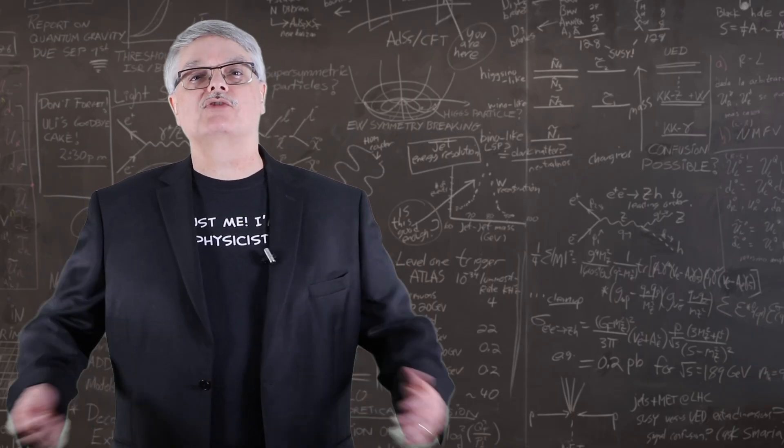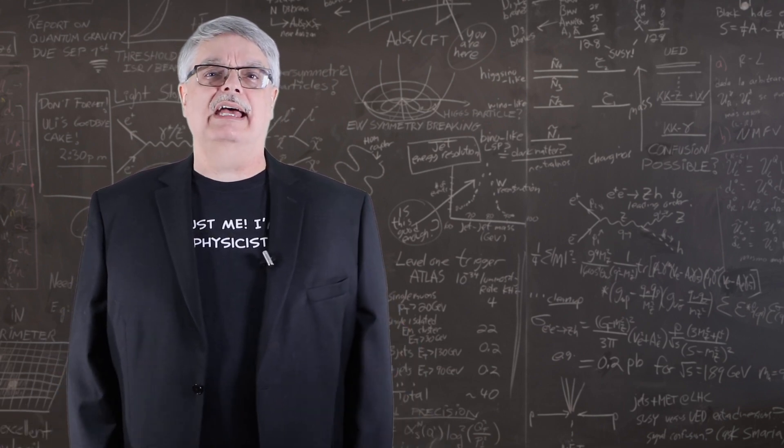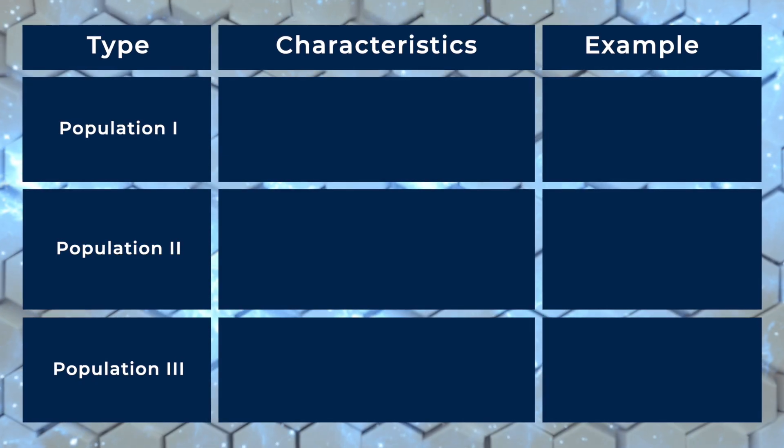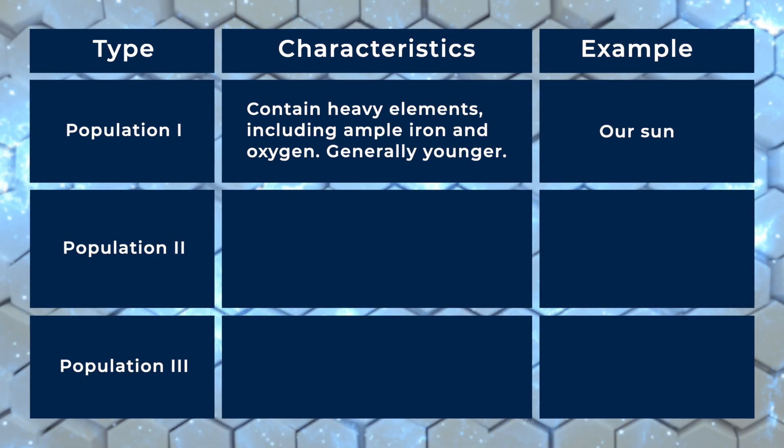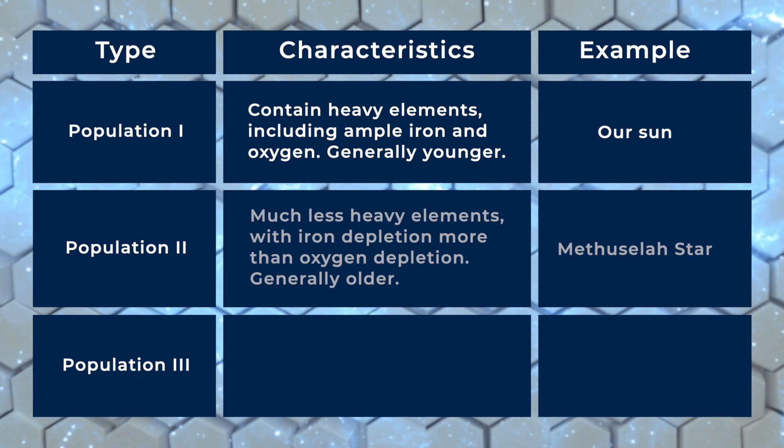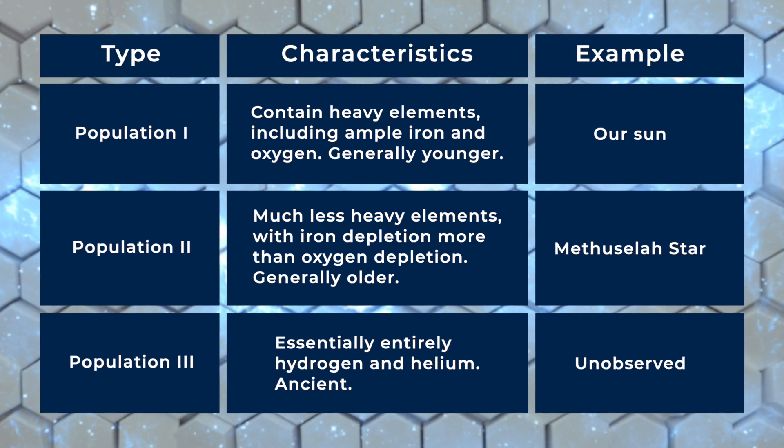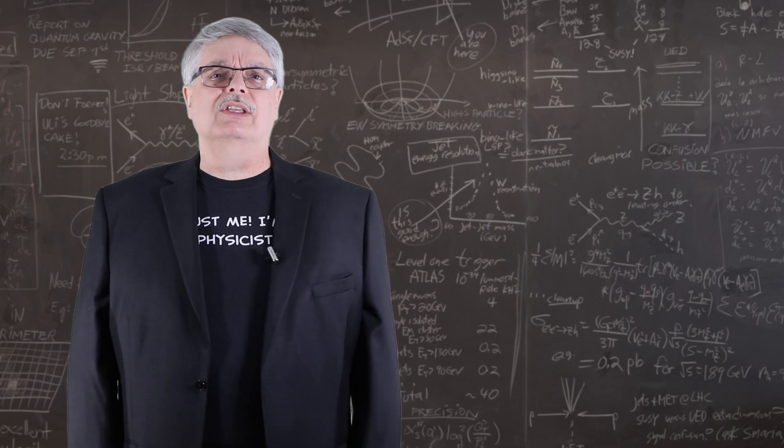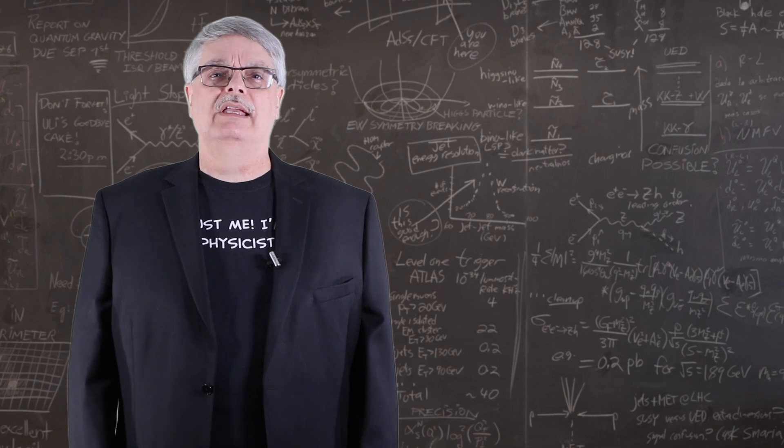So how is it that astronomers have determined the Methuselah star to have been so old? Well, to understand that, you have to know that there are three different known populations of stars: 1, 2, and 3. Our own sun is a member of population 1 stars. The Methuselah star is a population 2 star. And population 3 stars are merely hypothetical. No population 3 star has been observed. The distinction between the three different populations is the amount of heavier elements found in them. This is directly related to when the stars were formed.